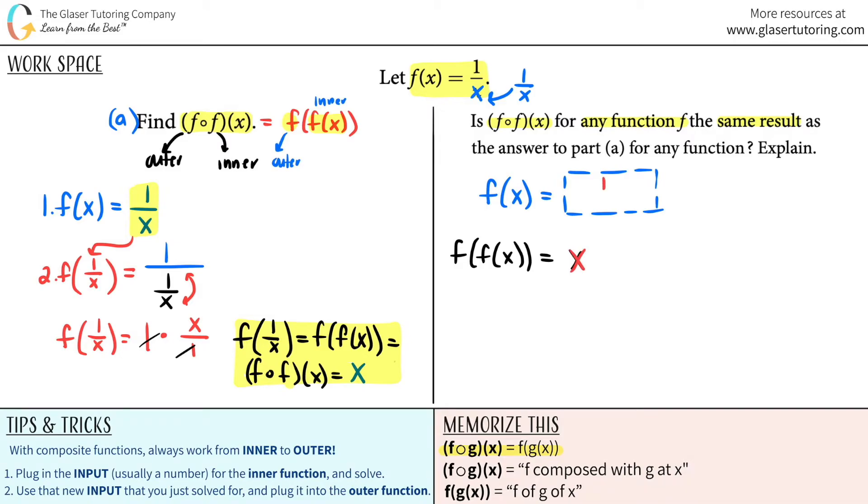Instead of maybe one over x, maybe I'll say, I don't know, x plus two or x plus three, or you could even get crazy. You know, you could do like two x plus seven. It doesn't matter, make up anything. I'm just going to try to keep it simple here. Cause this is kind of like a theoretical question. Let's just say x plus two. Now I'm going to take this function and solve for my composite function and let's see if we get the same answer.